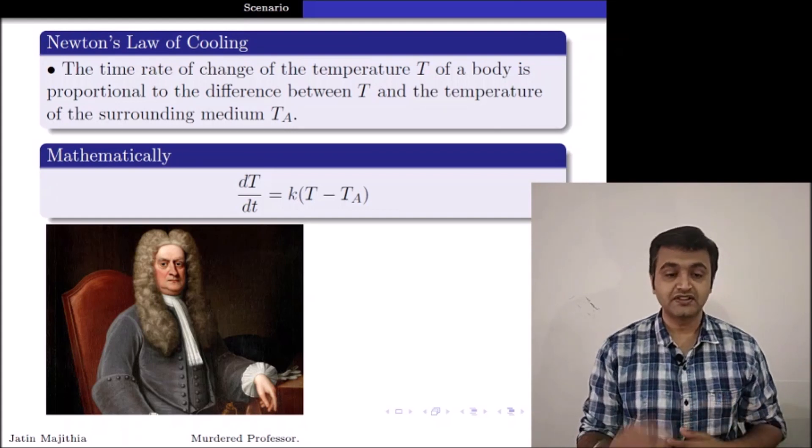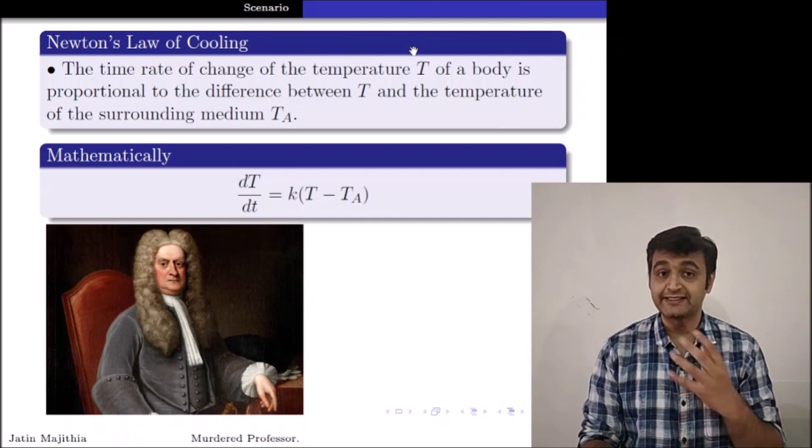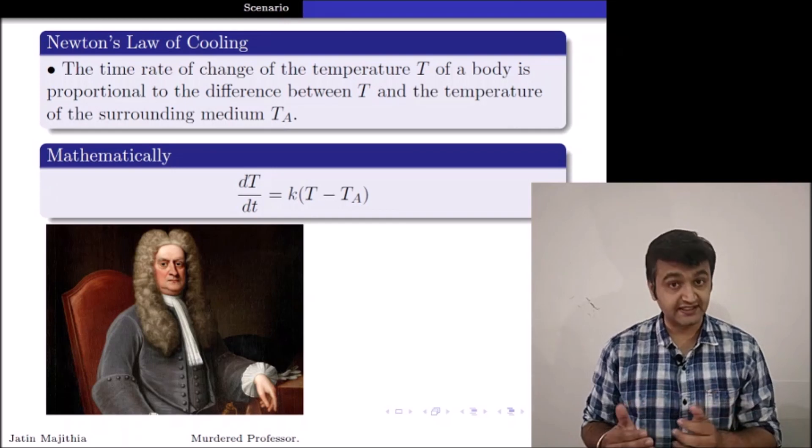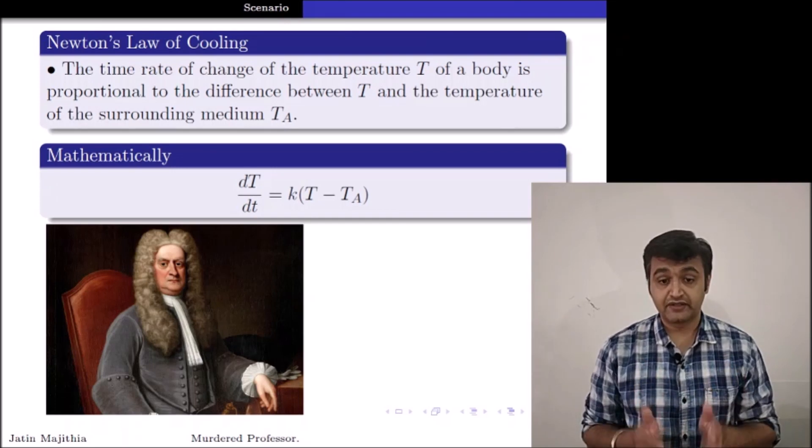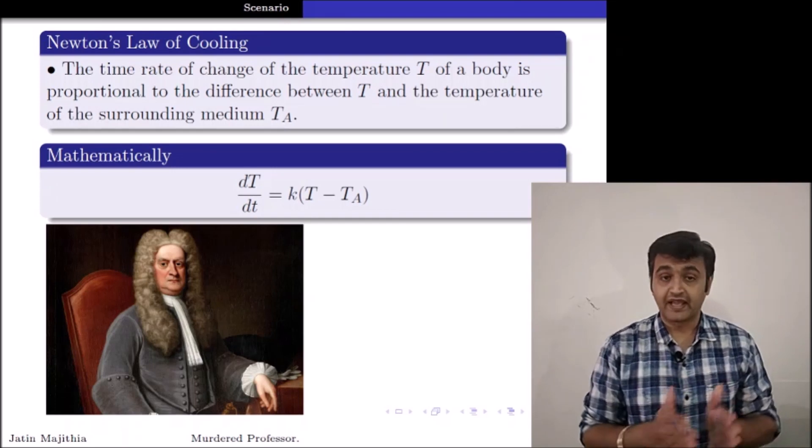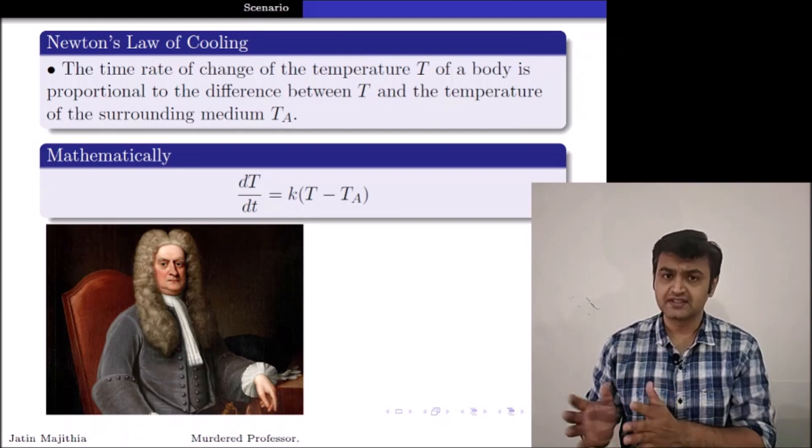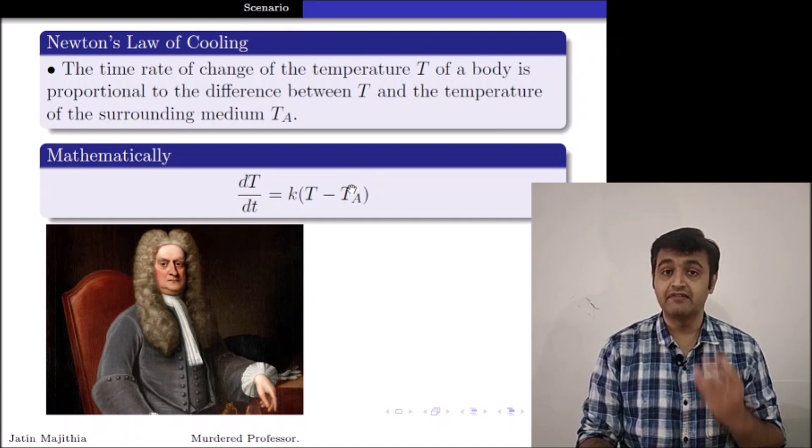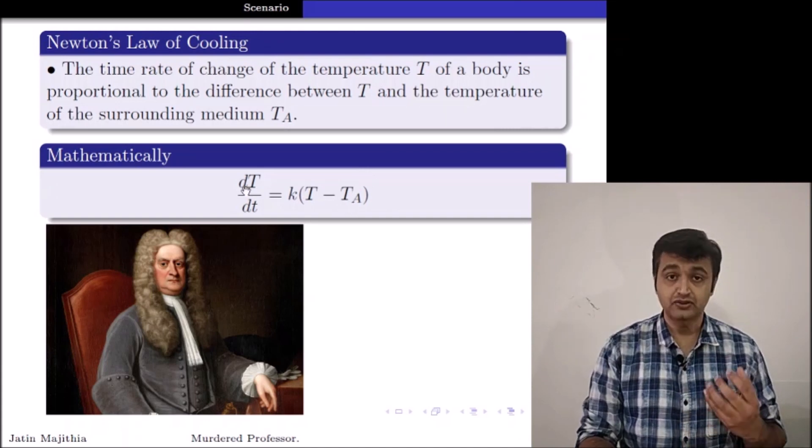So here, what is Newton's law of cooling says? It says that if capital T is the temperature of a body, the rate at which the temperature of the body changes is proportional to the difference between the temperature T and the ambient temperature or the surrounding temperature. The surrounding temperature, I will represent it by T suffix A.